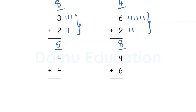For four plus four: draw four lines — one, two, three, four — then draw another four lines — one, two, three, four. Count all combined: one, two, three, four, five, six, seven, eight. So four plus four equals eight.